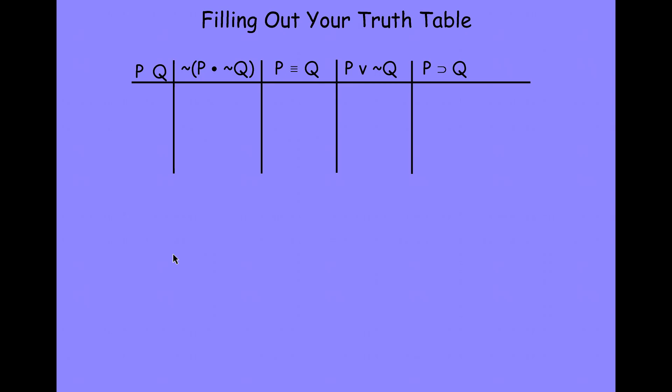The number of rows that we need is determined by the number of letters that we have for simple statements. The number of rows is going to be equal to 2 to the n, where n equals the number of simple statement letters. In this Truth Table, we've got two simple statement letters, so the number of rows is 2 to the n equals 2 to the 2, which equals 4. If we had three letters, it would be 2 to the n equals 2 to the 3rd equals 8.